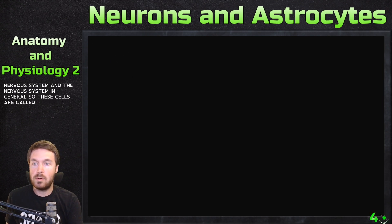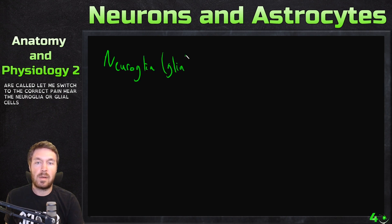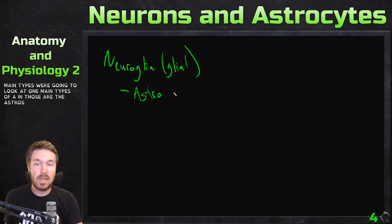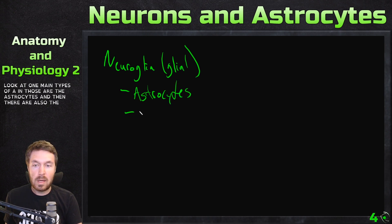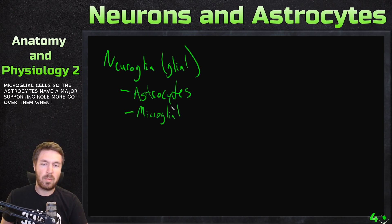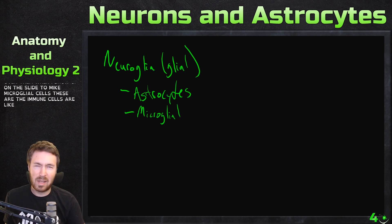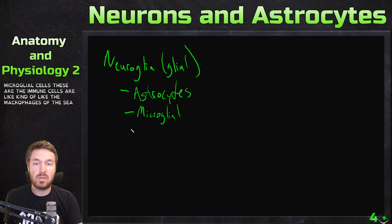So these cells are called the neuroglia or glial cells. These are broken up into four main types. We're going to look at one main type today, and those are the astrocytes. There are also the microglial cells. The astrocytes have a major supporting role, and the microglial cells are the immune cells, like the macrophages of the central nervous system.